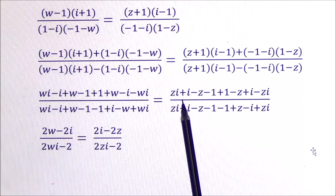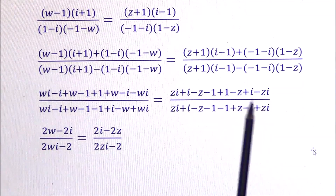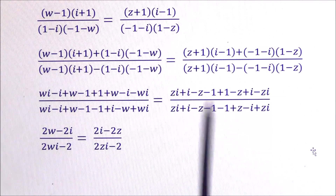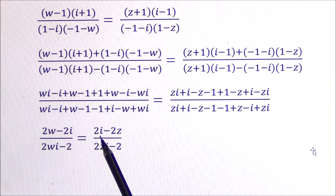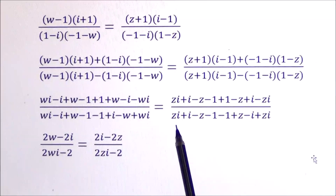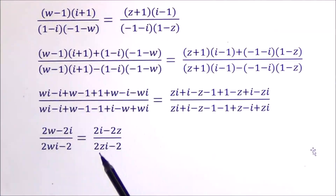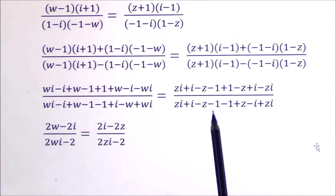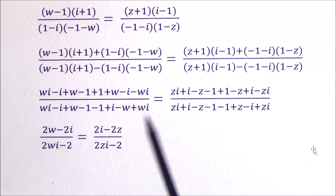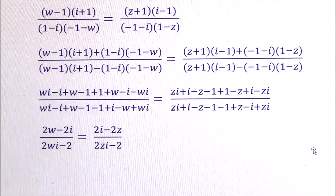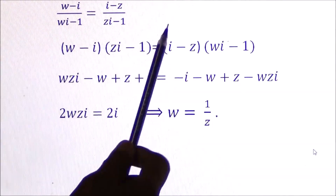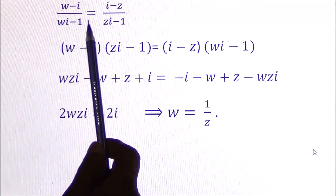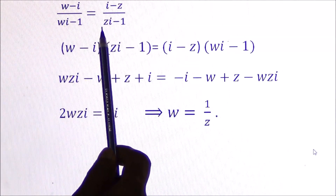On the right-hand side, Zi - Zi cancels. -Z - Z = -2Z and i + i = 2i, giving 2i - 2Z in the numerator. The denominator gives Zi + Zi = 2Zi; i - i cancels, -Z + Z cancels, and -1 - 1 = -2. Cancelling the common factor of 2, we finally get: (W - i) / (Wi - 1) = (i - Z) / (Zi - 1).